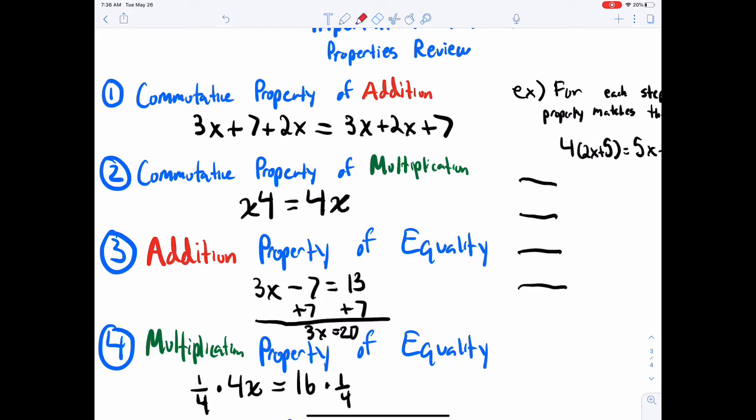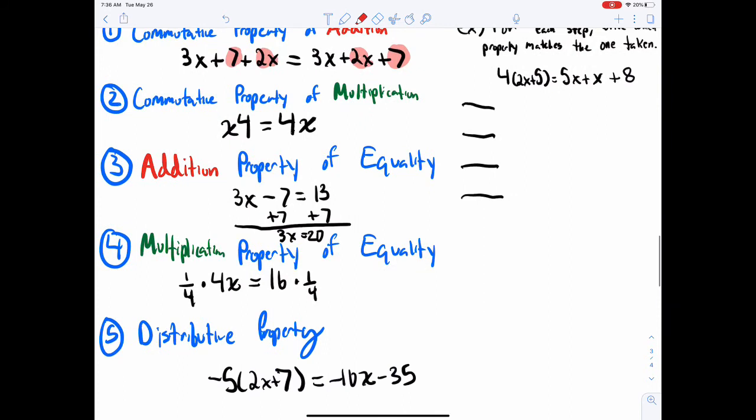The first one here, just going through these, commutative property of addition. Obviously it's going to involve adding and it's also going to involve things moving. Things moving. So if you look here, from the left side to the right side they're still equal, but the 2x and the 7x, they switch spots. Now they're here. That's called, you're allowed to do that in math, and it's called the commutative property of addition. The second one is like it, you can move things but you're multiplying.